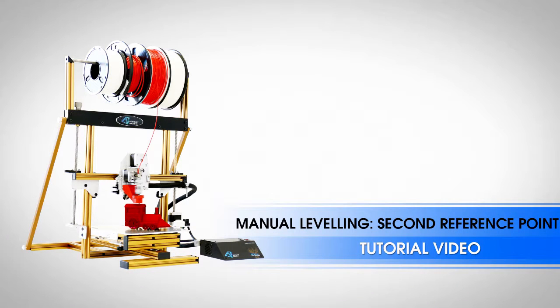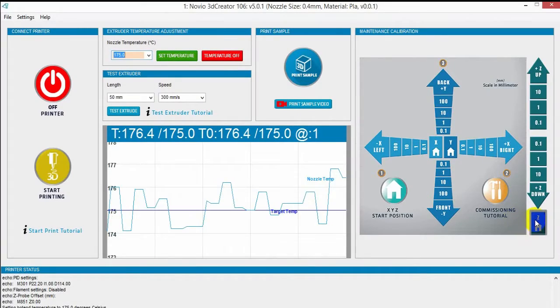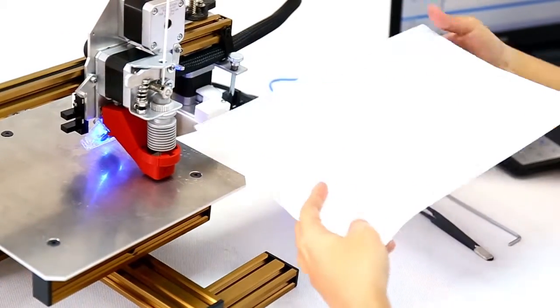The Second Reference Point Manual Leveling Tutorial Step 2. Start by clicking the Z Home button. Check the distance with a sheet of paper.